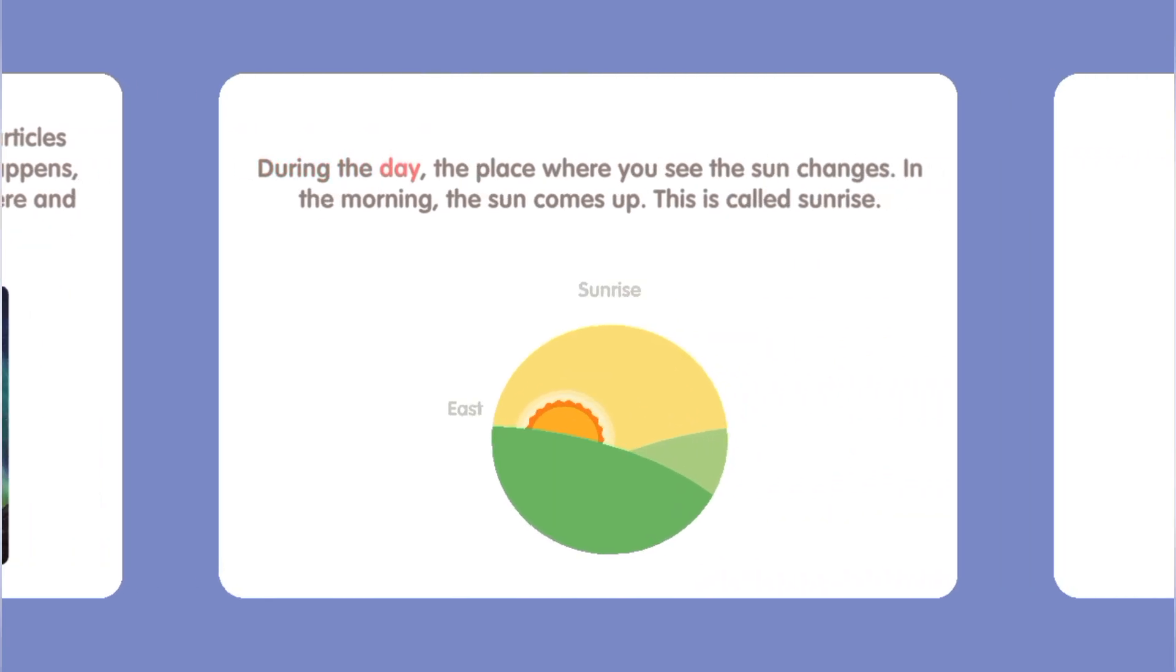During the day, the place where you see the Sun changes. In the morning, the Sun comes up. This is called sunrise.